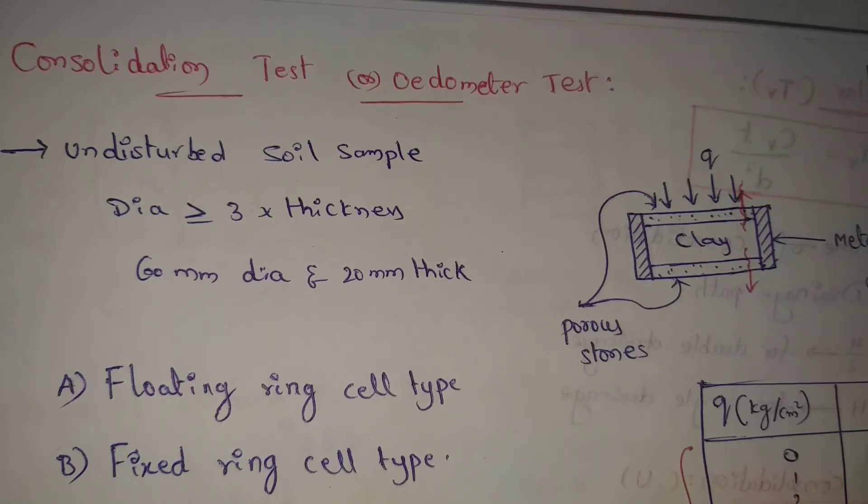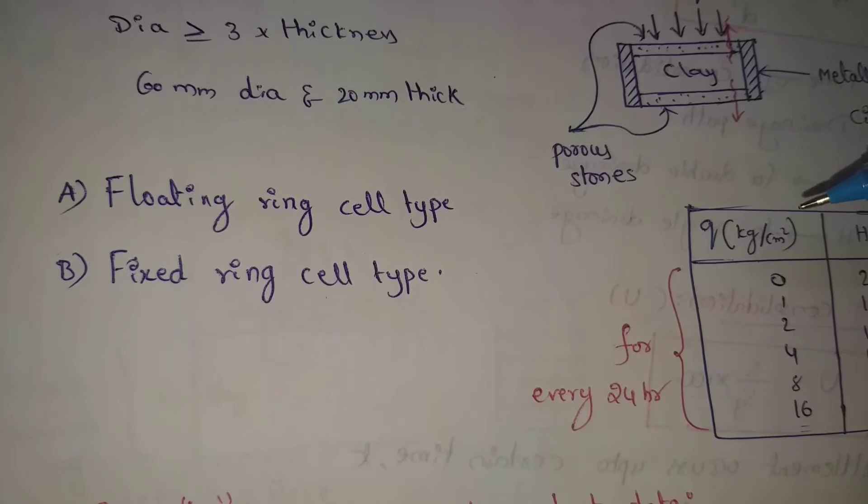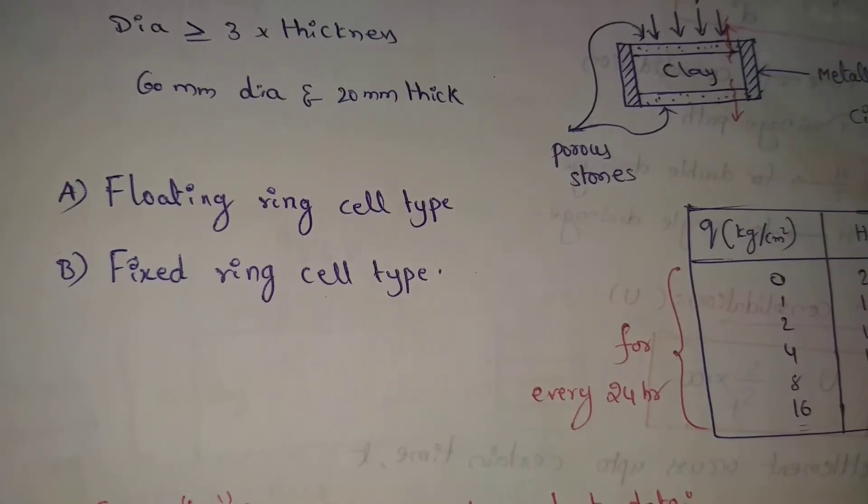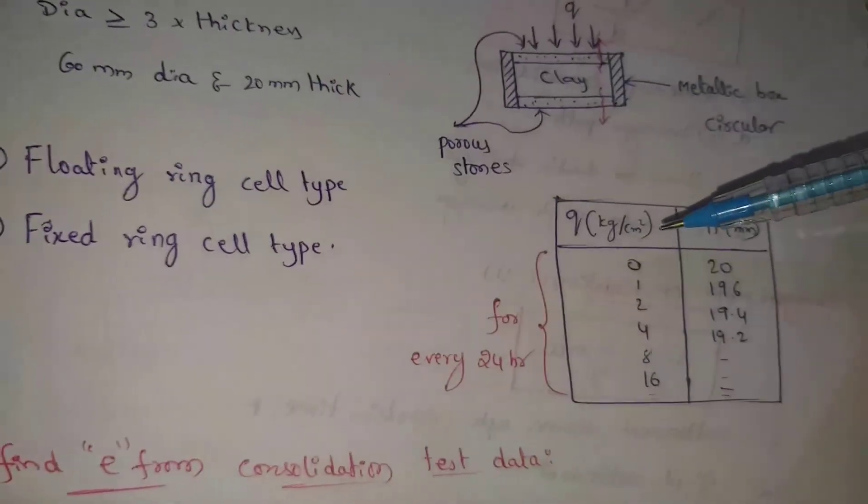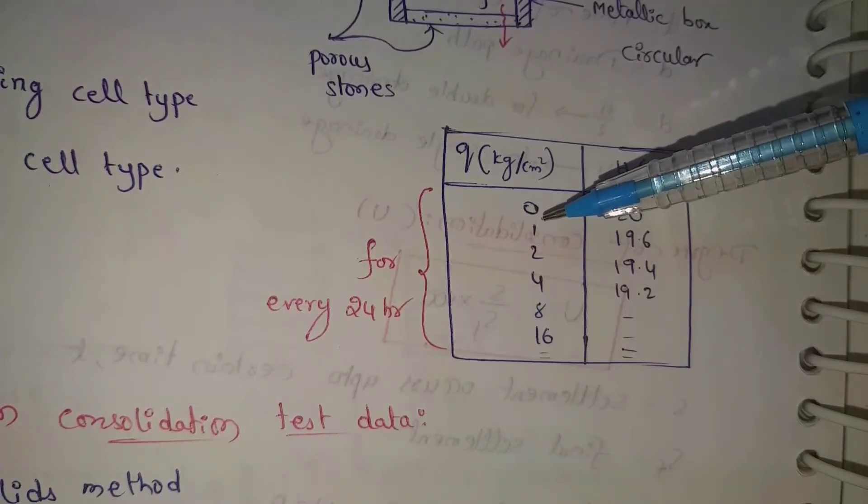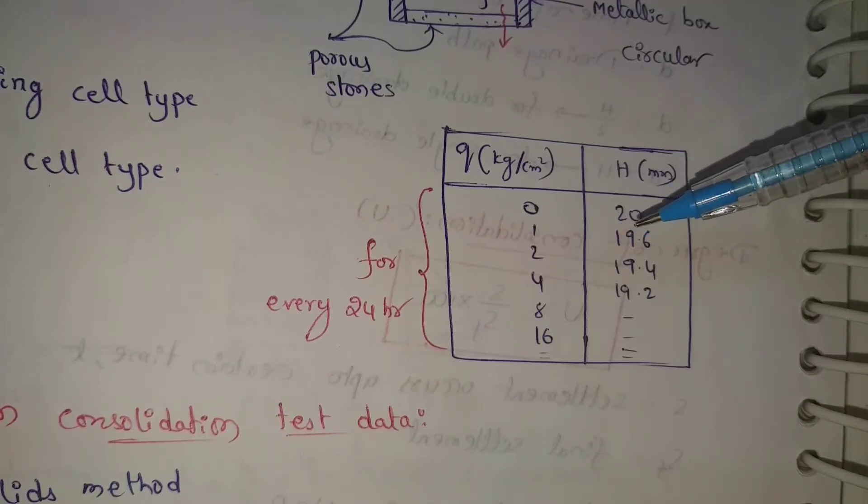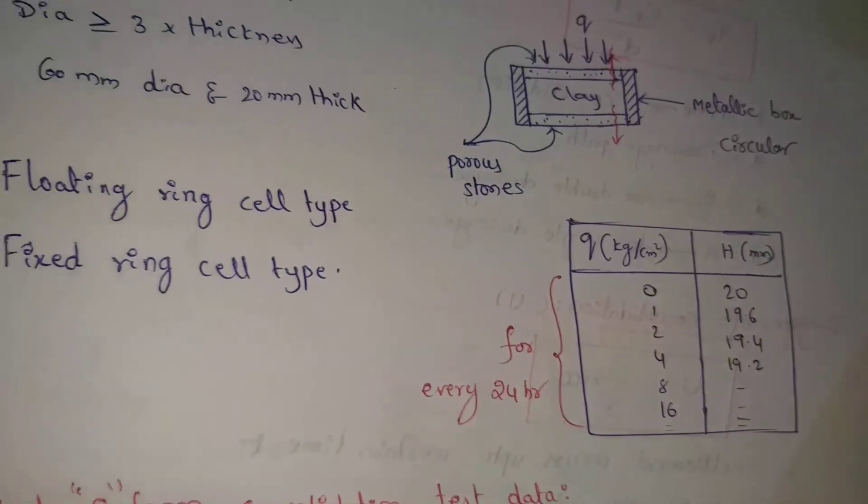In this method, some intensity of loading in kg per centimeter square is applied every 24 hours. When we apply the load, the soil sample height and thickness decrease. The clay drains out, so every 24 hours we take readings. First we apply load and get 20 mm, next 24 hours 19.6 mm, next reading 19.4, 19.2, and so on. This consolidation process continues until the values of change become negligible.